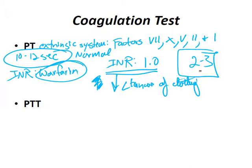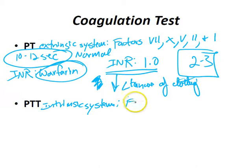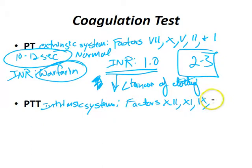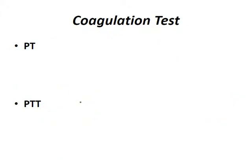The partial thromboplastin time, also known as the PTT, evaluates the intrinsic system. That's talking about factors 12, 11, 9, 10, 5, 2, 1, and 8. The normal PTT is 25 to 40 seconds.